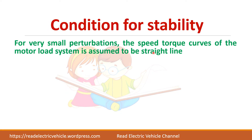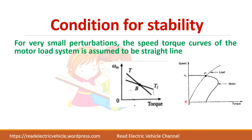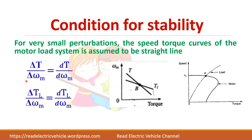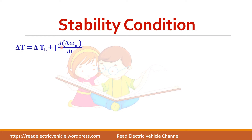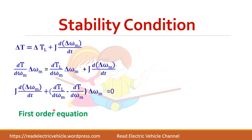For very small perturbations, the speed-torque characteristics of the motor-load system can be assumed to be a straight line locally. Therefore, delta-T divided by delta-omega-m can be approximated as DT by D-omega-m. Substituting this linearization into the previous equation and simplifying yields a first-order differential equation of the form D(delta-omega-m) by DT plus a constant term times delta-omega-m equals zero.